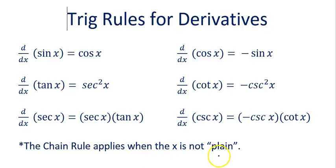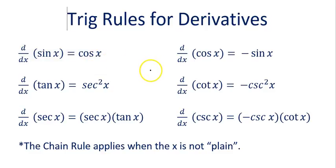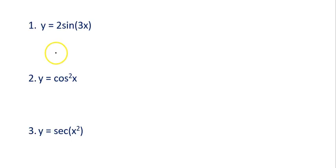Whenever we're doing these we are also going to be using the chain rule when it's not a plain x. All of these rules show plain x's, but if I had 5x or x squared I would use the chain rule and multiply by that derivative at the end.